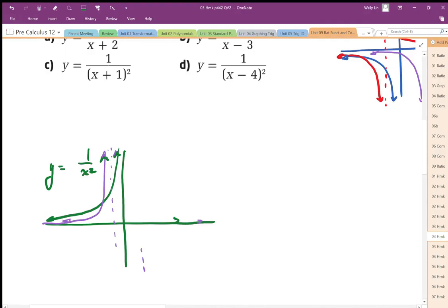Drawing the green base function again, that's my root function, and then the transformed function shifts negative 1.